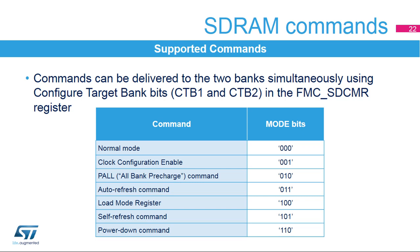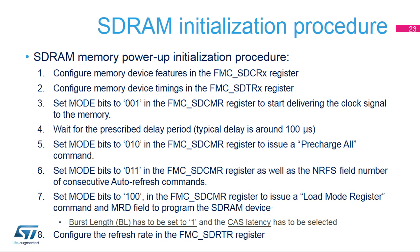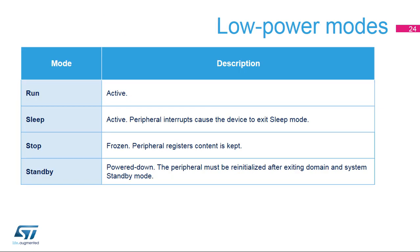The SDRAM controller can issue different commands to the SDRAM devices. Commands are issued by software to initialize the SDRAM device or to switch the device mode, and can be delivered to the two banks simultaneously using configured target bank bits CTB1 and CTB2 in the FMC SDCMR register. The FMC is active in run and sleep modes, and an FMC interrupt can cause the device to exit sleep mode. To retain external SDRAM memory data while in stop or standby modes, it can be put in self-refresh mode prior to entering those modes.